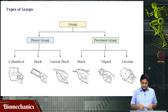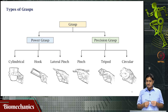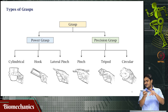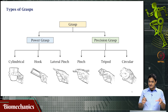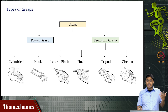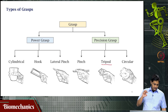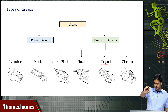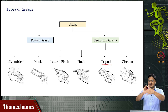Then there is the precision grasp, classified into different types — pinch grip with two fingers, or grasping with three fingers forming three legs of a tripod, also called a tripod grasp. You can also hold a circular object with fingers almost touching each other, grasping around the circle — this is a circular grasp.